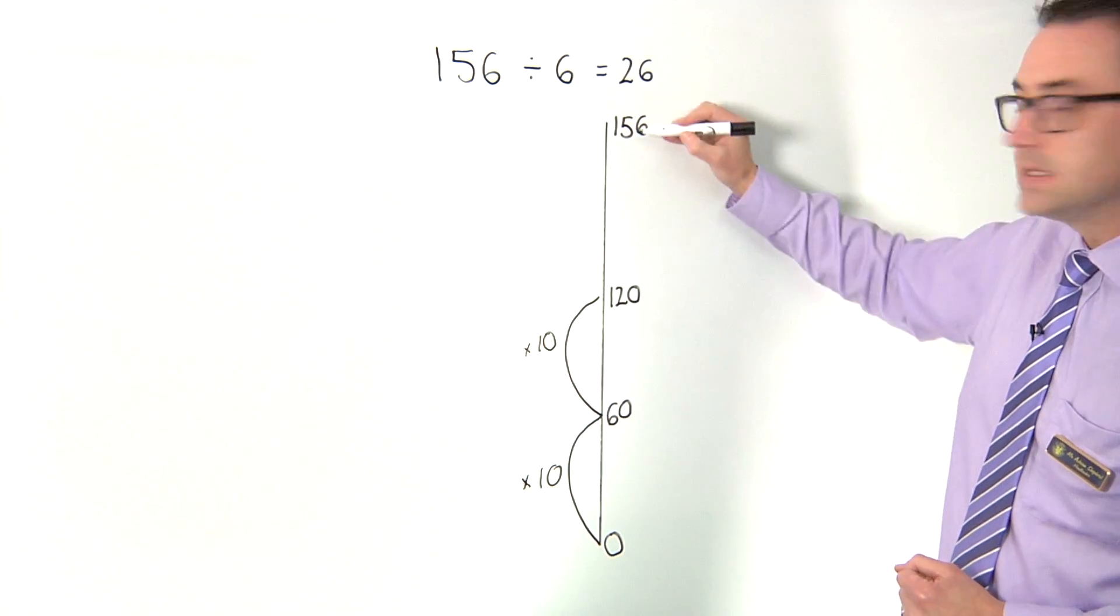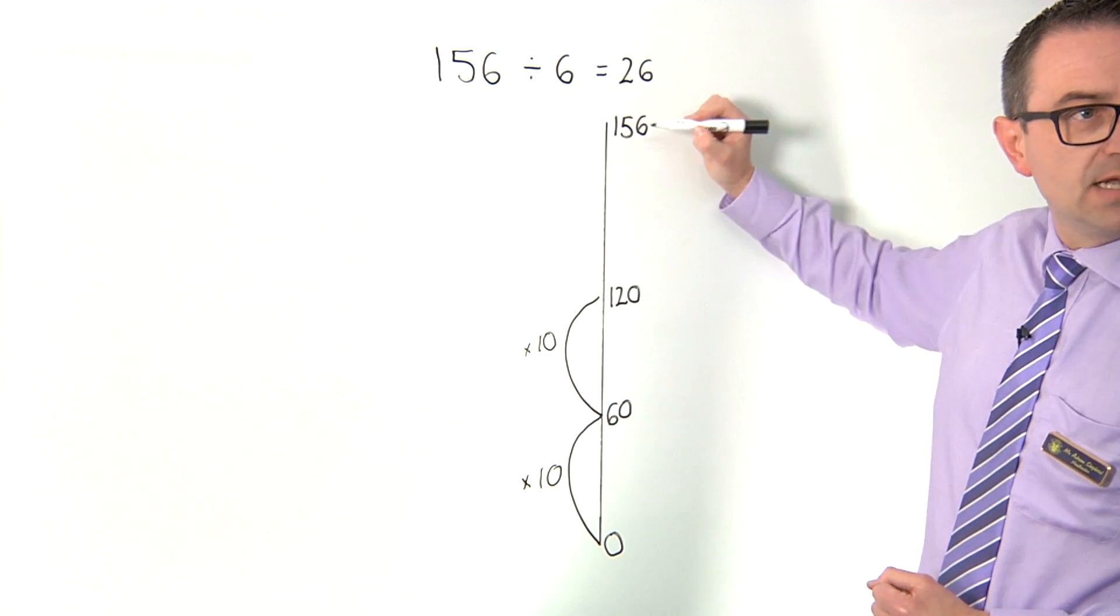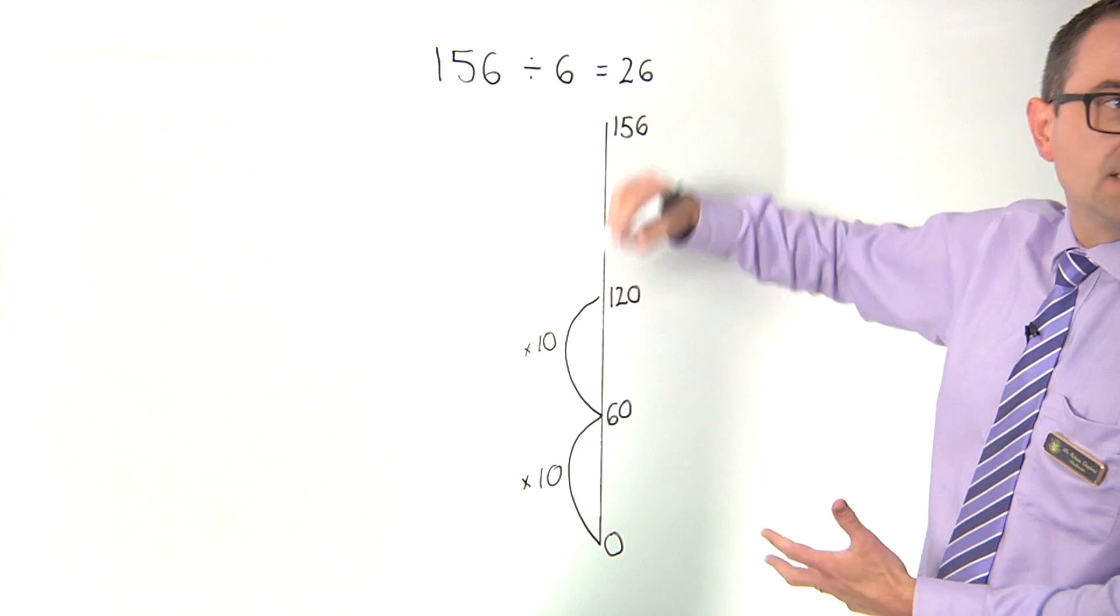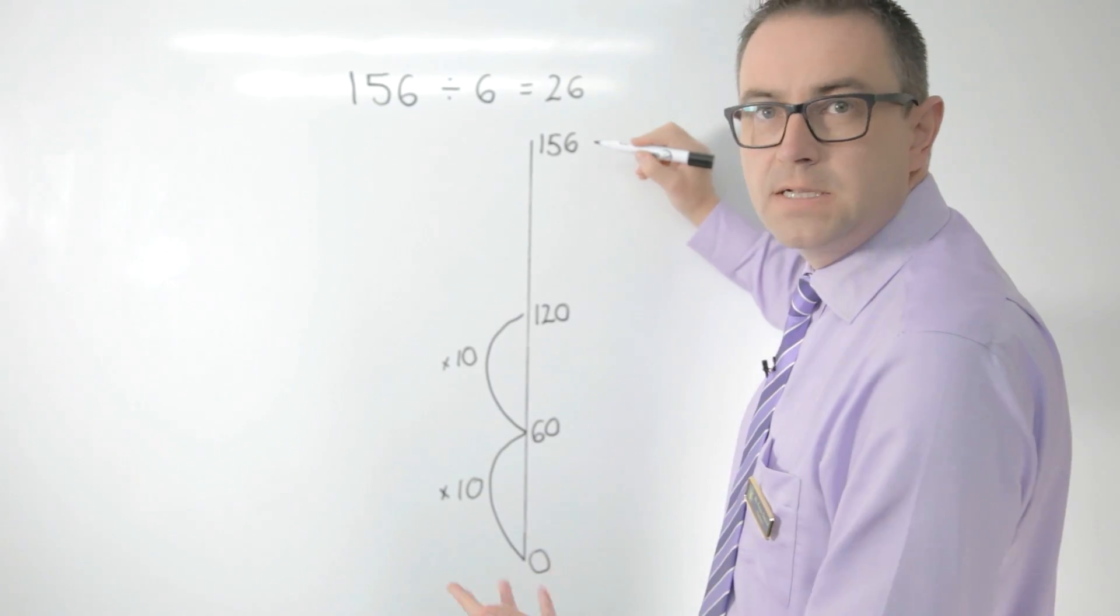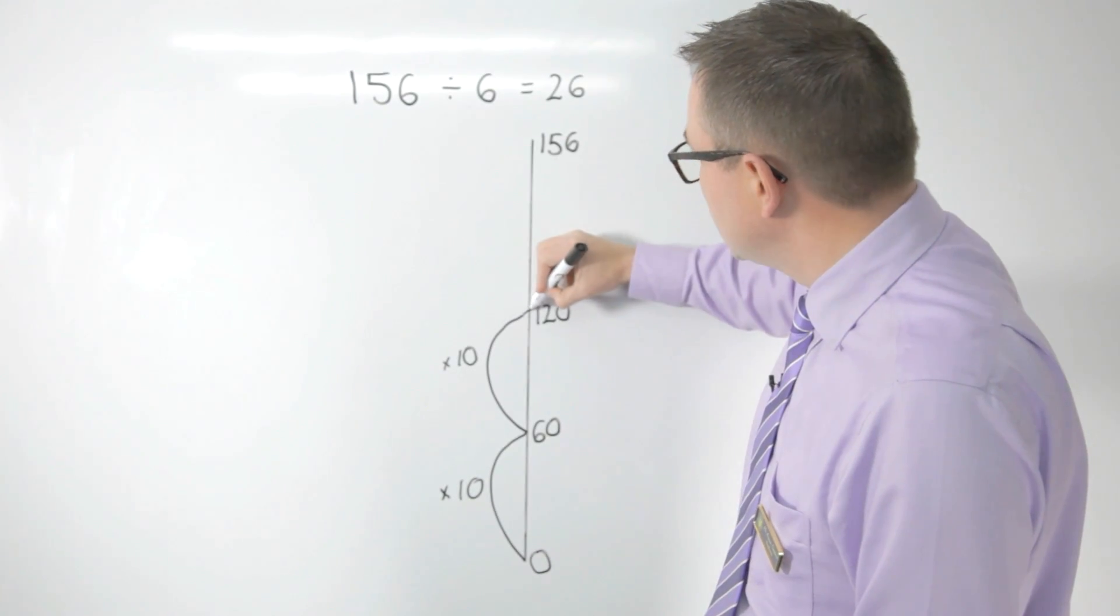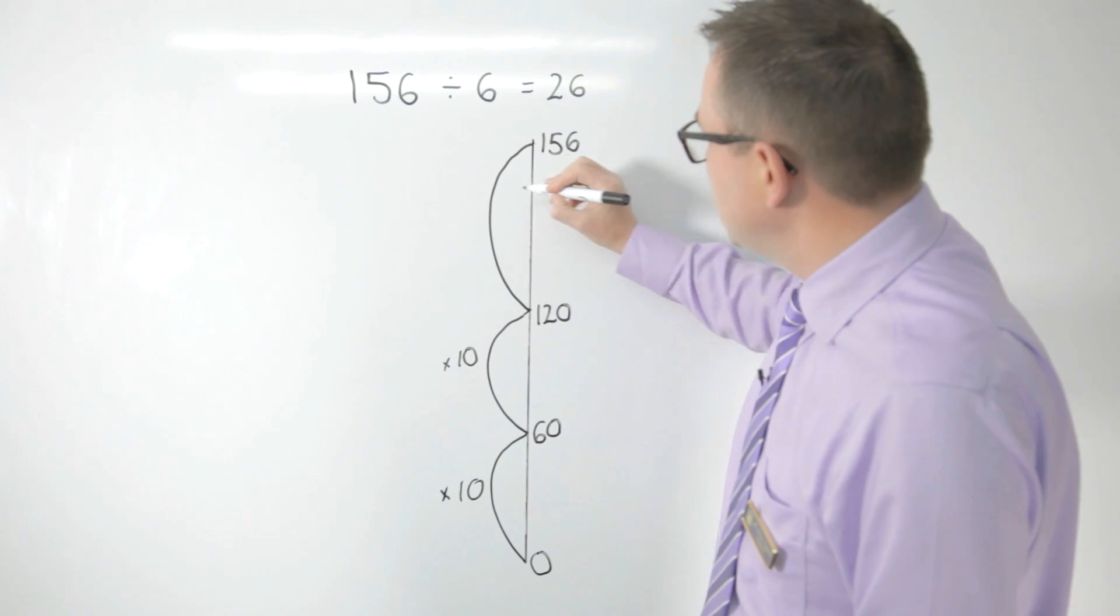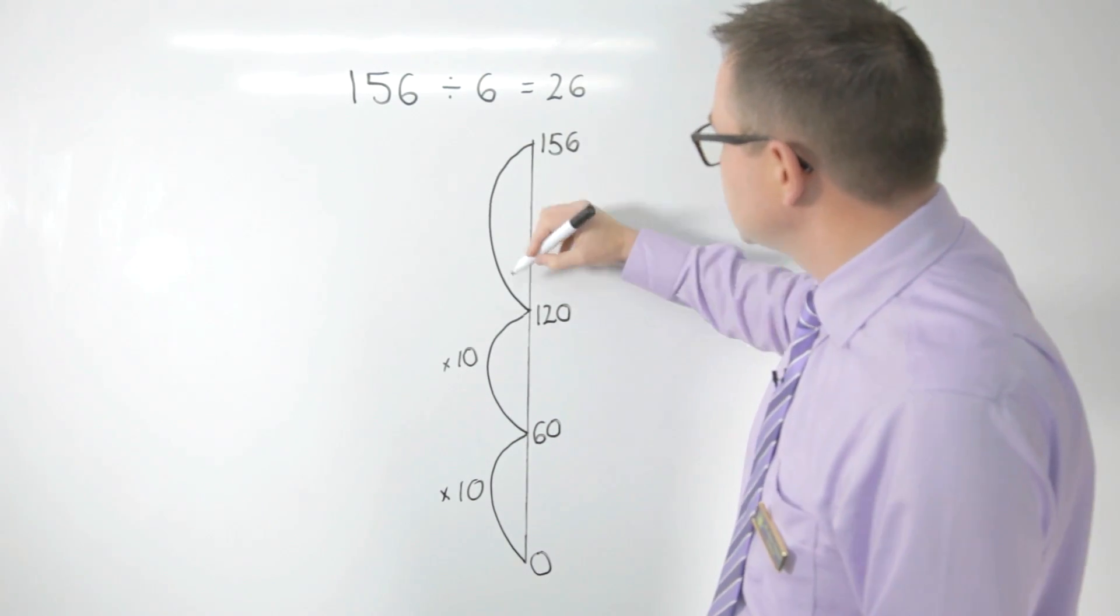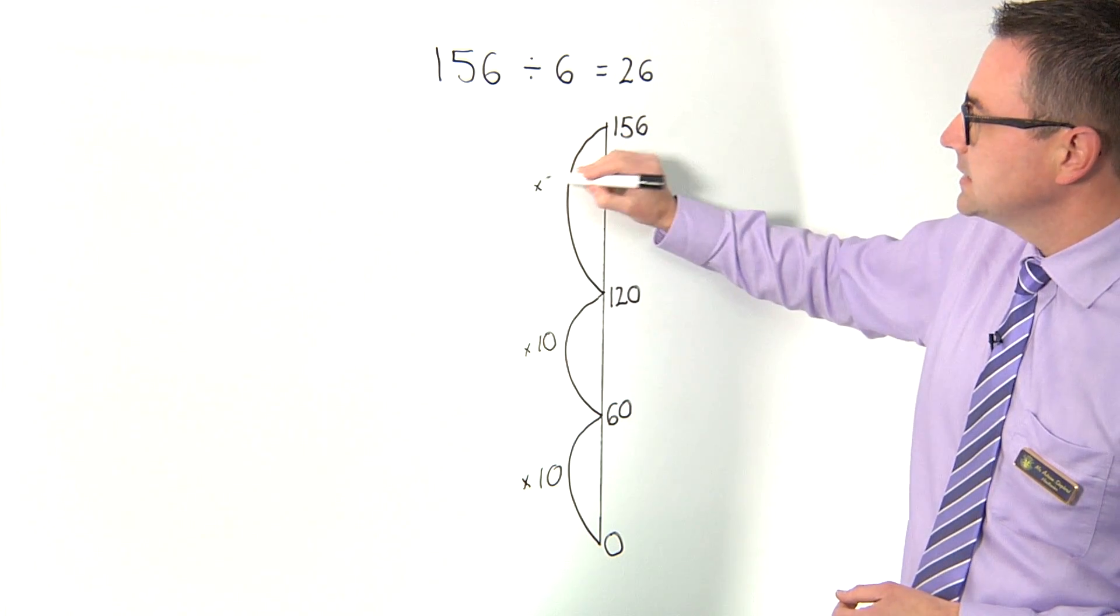And now I can see the difference between the 120 and 156. In this case I'll do one jump straight there, but as I said earlier you might make smaller jumps, and that will take me to 156. That jump of 36 is 6 lots.